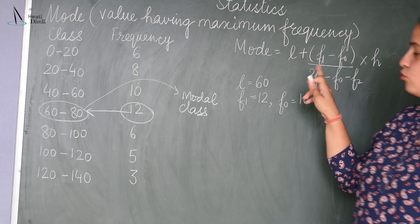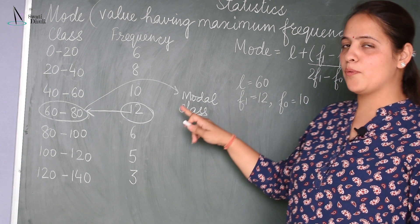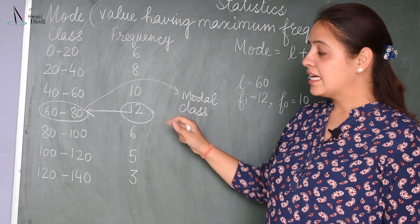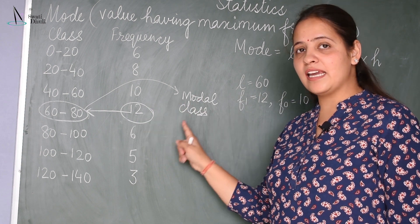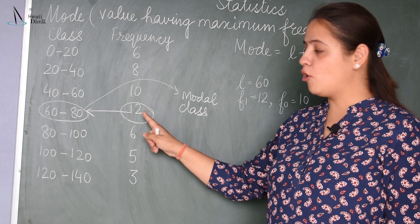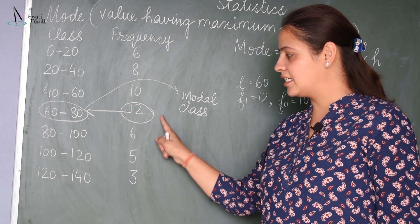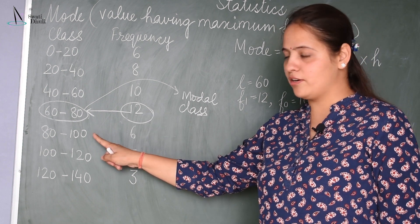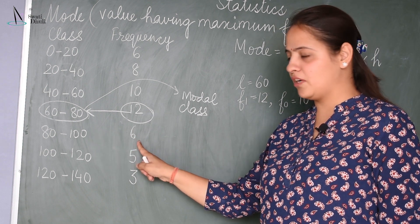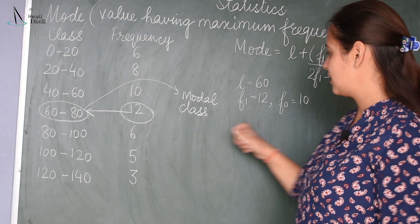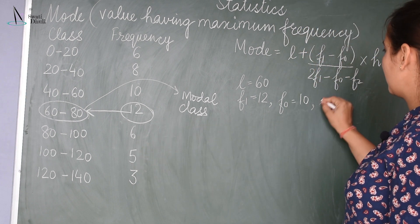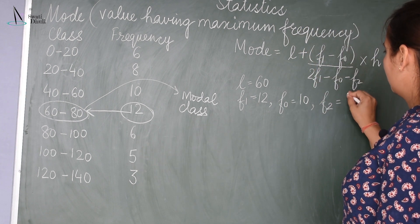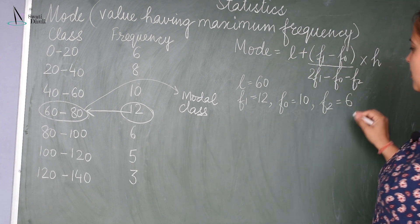Now F2 is the frequency of the class succeeding the modal class. Succeeding the modal class 60 to 80 is the class 80 to 100, and the corresponding frequency is 6. So F2 = 6.